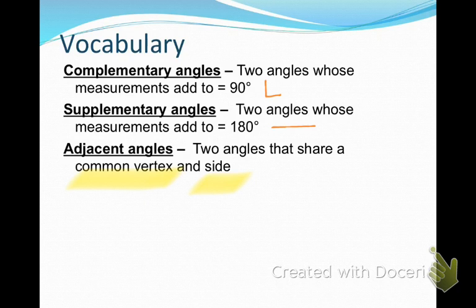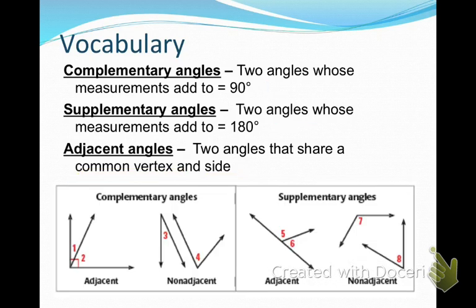Let's look at some diagrams because complementary angles can be either adjacent or non-adjacent. Notice if they're adjacent, they share the same vertex and they have a common side. But they don't have to be hooked together — adjacent angles are hooked together, non-adjacent are not. They can just be two angles whose measurements happen to add up to 90 degrees.